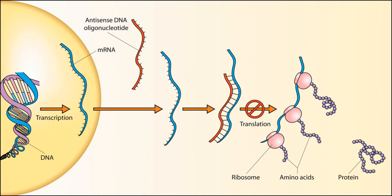Negative sense: Negative sense viral RNA is complementary to the viral mRNA, and thus a positive sense RNA must be produced from it by an RNA-dependent RNA polymerase prior to translation. Negative sense RNA has a nucleotide sequence complementary to the mRNA that it encodes. Like DNA, this RNA cannot be translated into protein directly. Instead, it must first be transcribed into a positive sense RNA that acts as an mRNA. Some viruses have negative sense genomes and so must carry an RNA polymerase inside the virion.